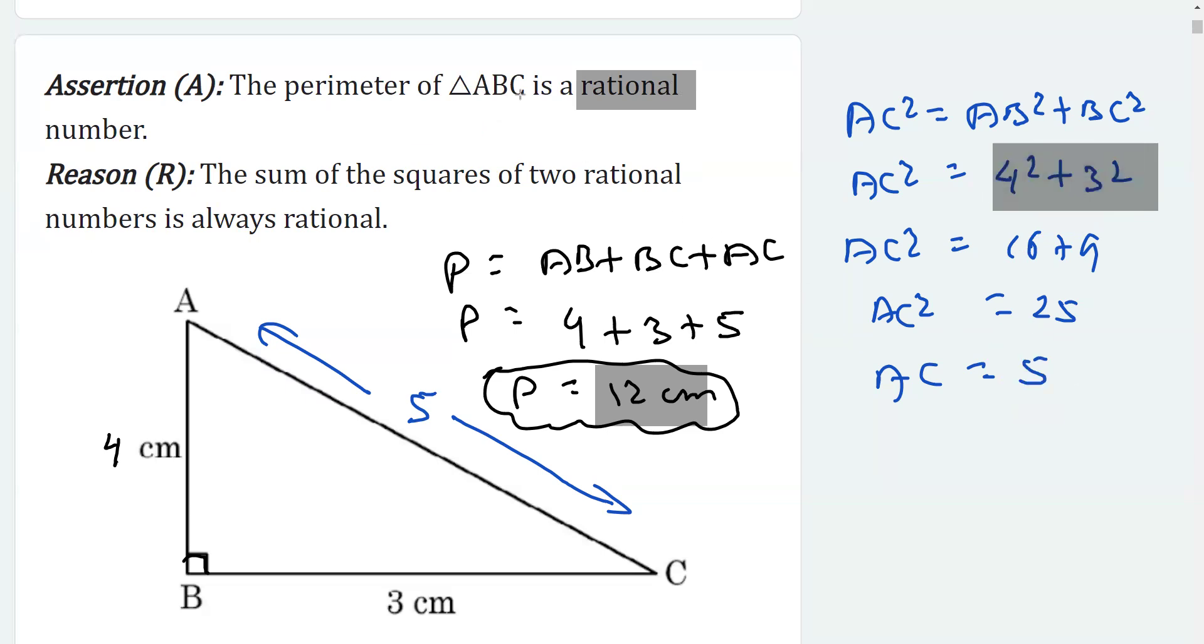But this is not always true. If I replace this 4 with 2, and I have to get the length of AC, I would say it is 2 squared plus 3 squared, which is 4 plus 9, and then AC will be under root 13.